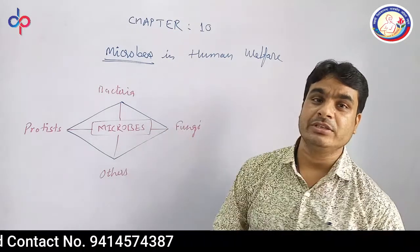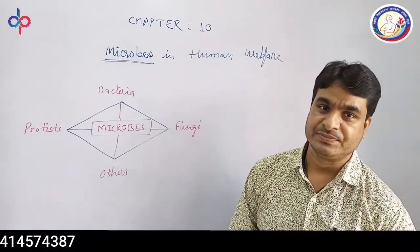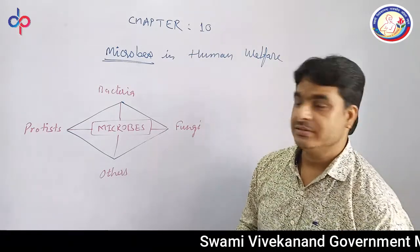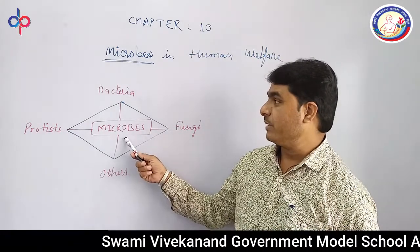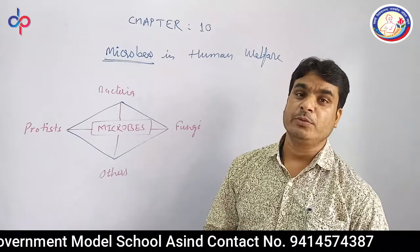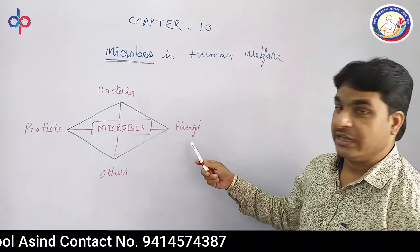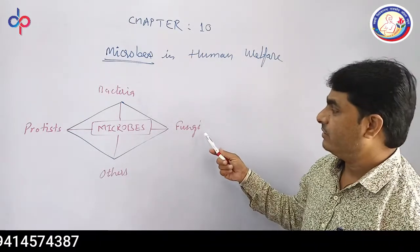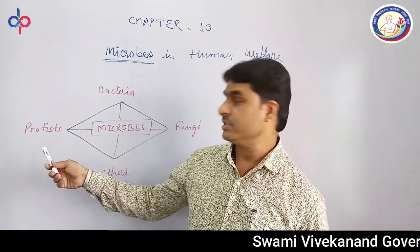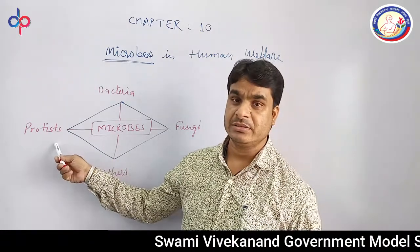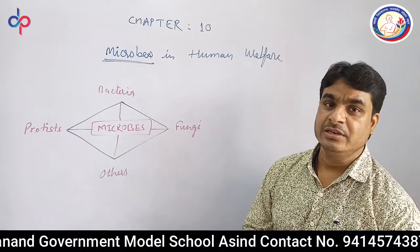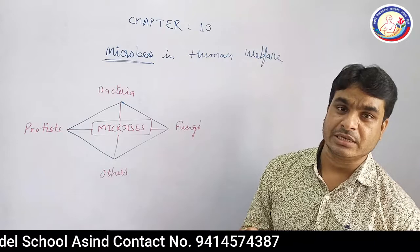Microbes are also known as invisible masters of the world. There are different types of microbes. The first microbe is bacteria — a group of unicellular prokaryotes. Another type is fungi. There are also unicellular eukaryotes known as protists, and many other microorganisms found in nature.